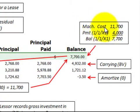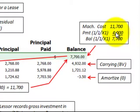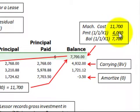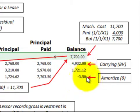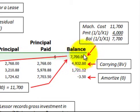We have a machine that we're leasing out. Its cost is $11,700. The lessee is going to pay a $4,000 payment at the beginning of the lease. So we have a balance of $7,700 remaining on this lease — the difference between the cost and this initial payment. The $7,700 is the amount we're going to amortize down to a zero balance at the end of the lease. It represents the fair value or present value of this lease after this initial payment.